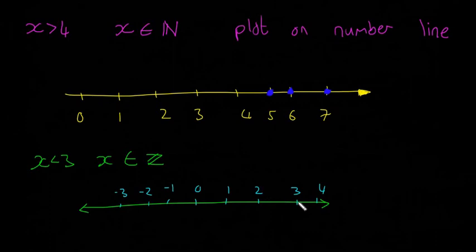x is less than 3, it's again going to be a close dot on everything that's less than 3, and every integer that's less than 3, which is going to be 2, 1, 0, minus 1, minus 2, minus 3, and so on. Close dot on all of these.